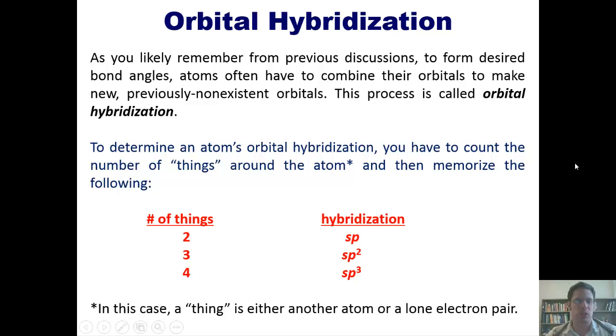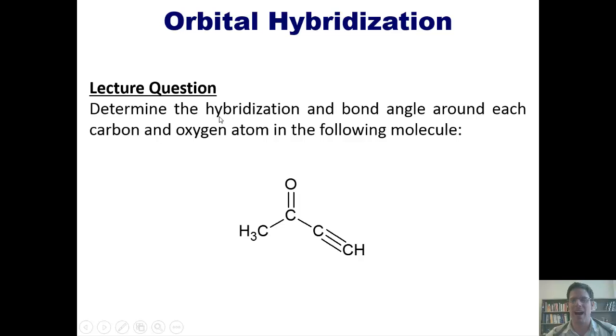Let's take a look then at a lecture question. I want you to determine the hybridization and bond angle around each carbon and oxygen atom in the following molecule. Please note that I have not drawn lone pairs around this oxygen up top, so you will have to do that in order to get the correct answer.